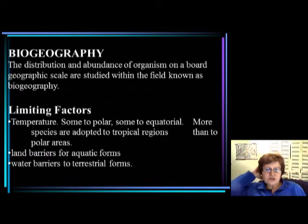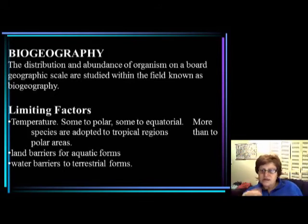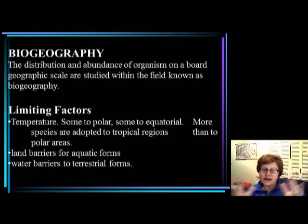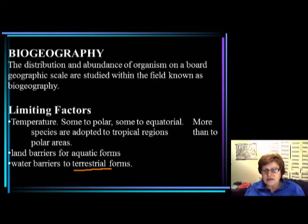Biogeography is the distribution and abundance of organisms on a broad geographic scale. What are the limiting factors for the distribution of life? First of all, temperature — we have polar, mediterranean, and tropical regions defined by temperature. We also have land barriers, which are barriers for aquatic forms, and water barriers, which are barriers for terrestrial forms. Terrestrial refers to everything on the continent.